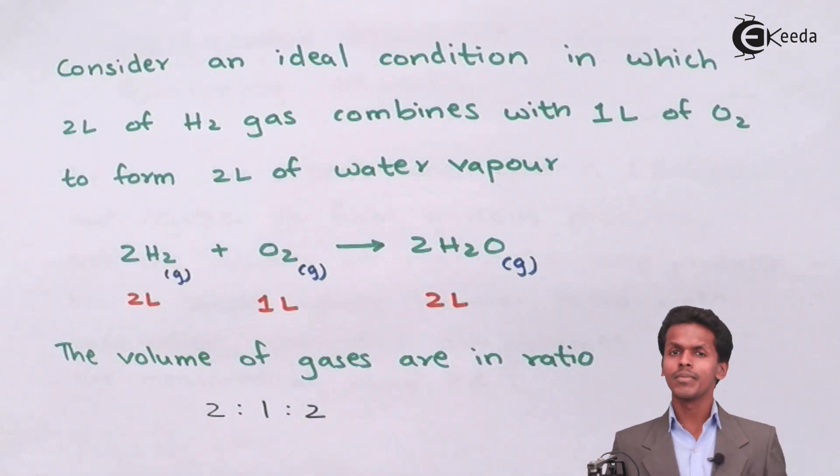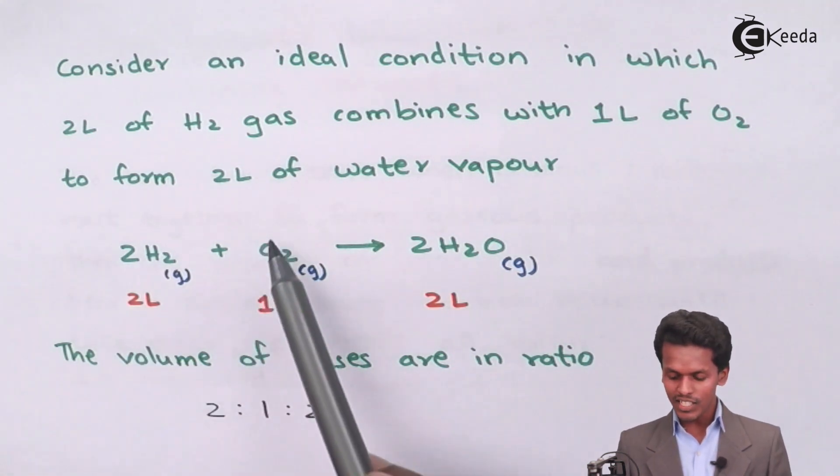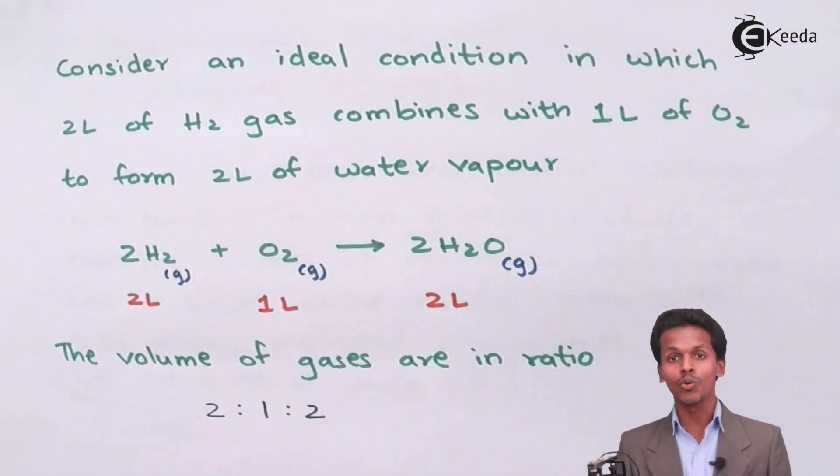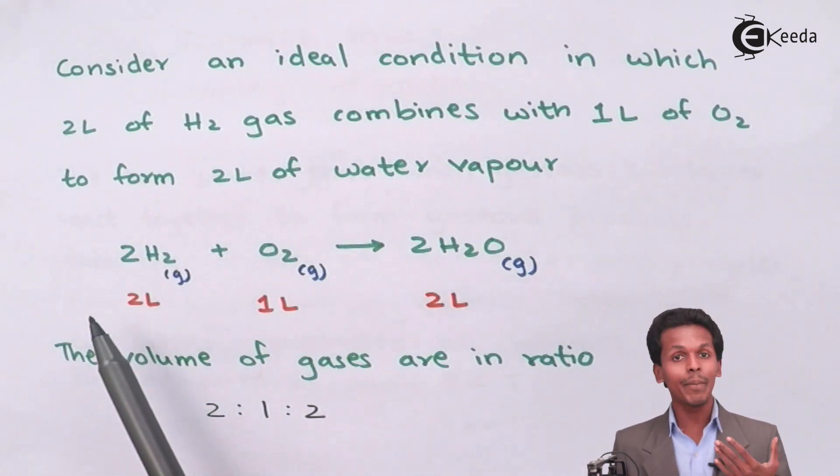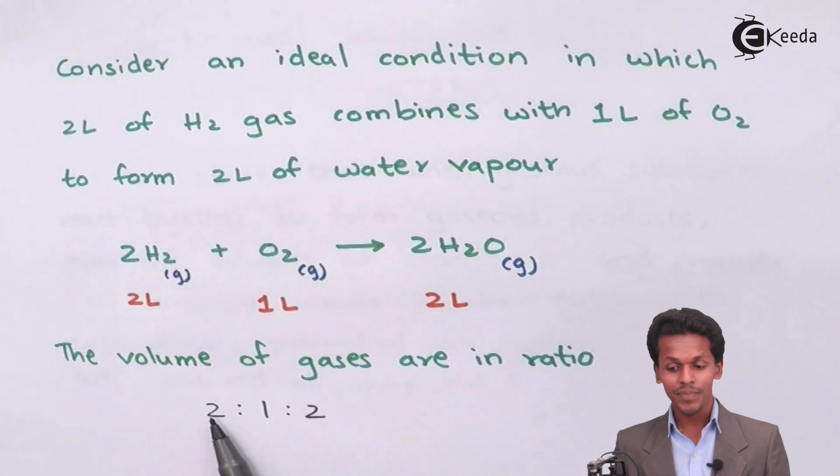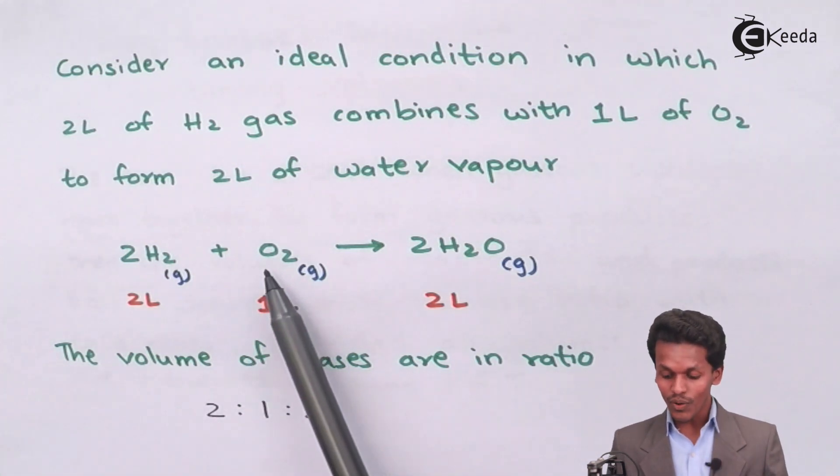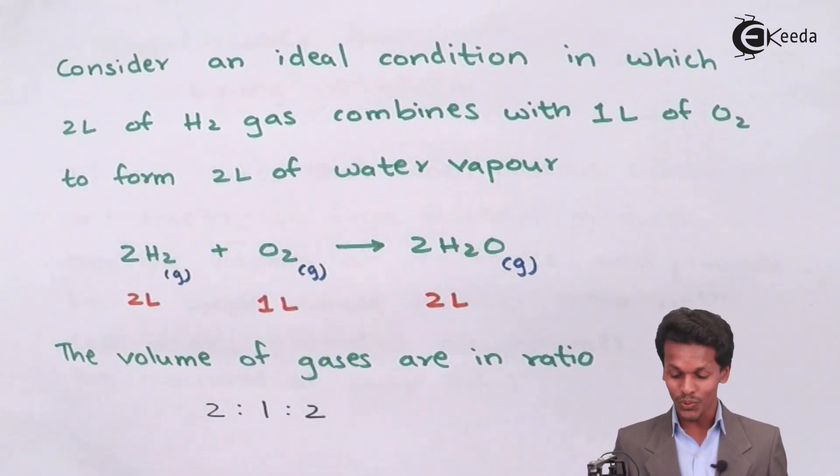We should maintain that everything involved should be in proper sequence. I cannot write it as 2:2:1, that would be different. If I write 2:2:1, it means I'm using 2 liters of hydrogen and 2 liters of oxygen, which is untrue in this case.